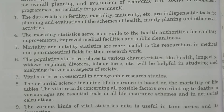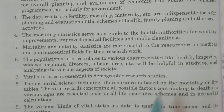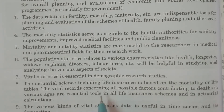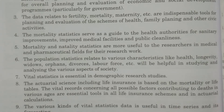The actuarial science uses vital statistics for life insurance. We have to pay premiums based on mortality tables. Birth rates, mortality rates, and life tables are the three components of vital statistics. The life table is the mortality table and is used to determine a human being's mortality rate, insurance premiums, and calculations.